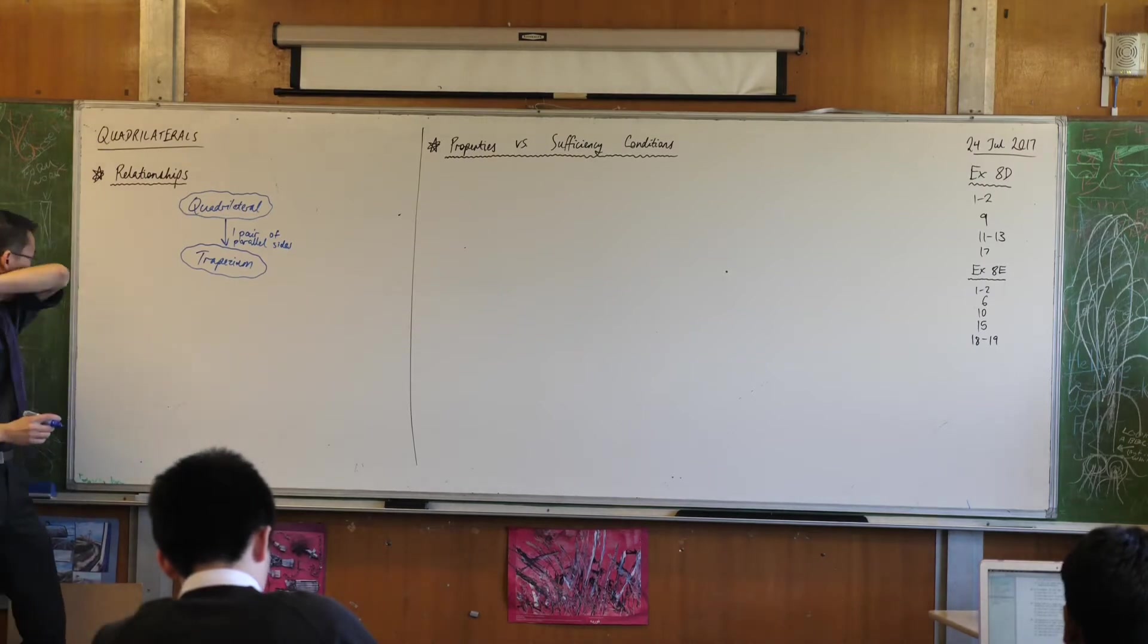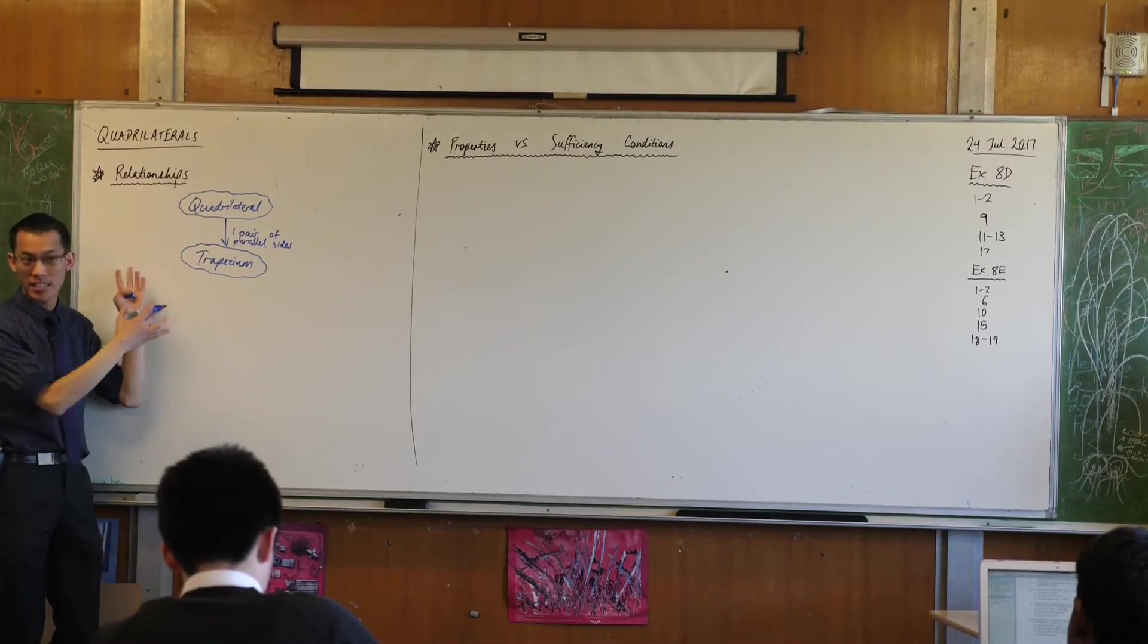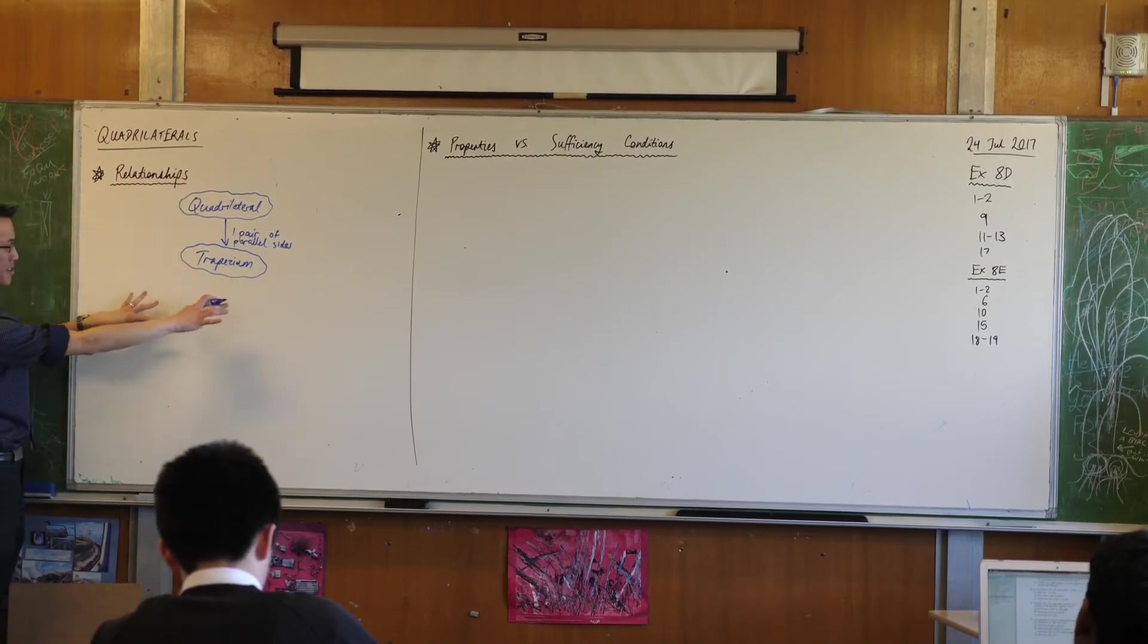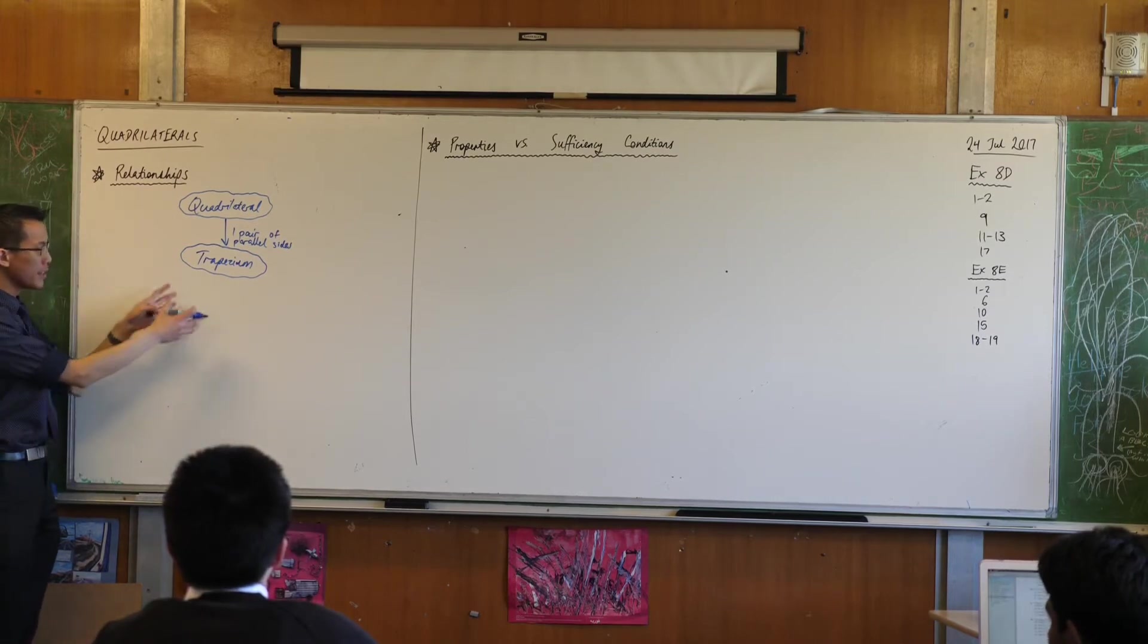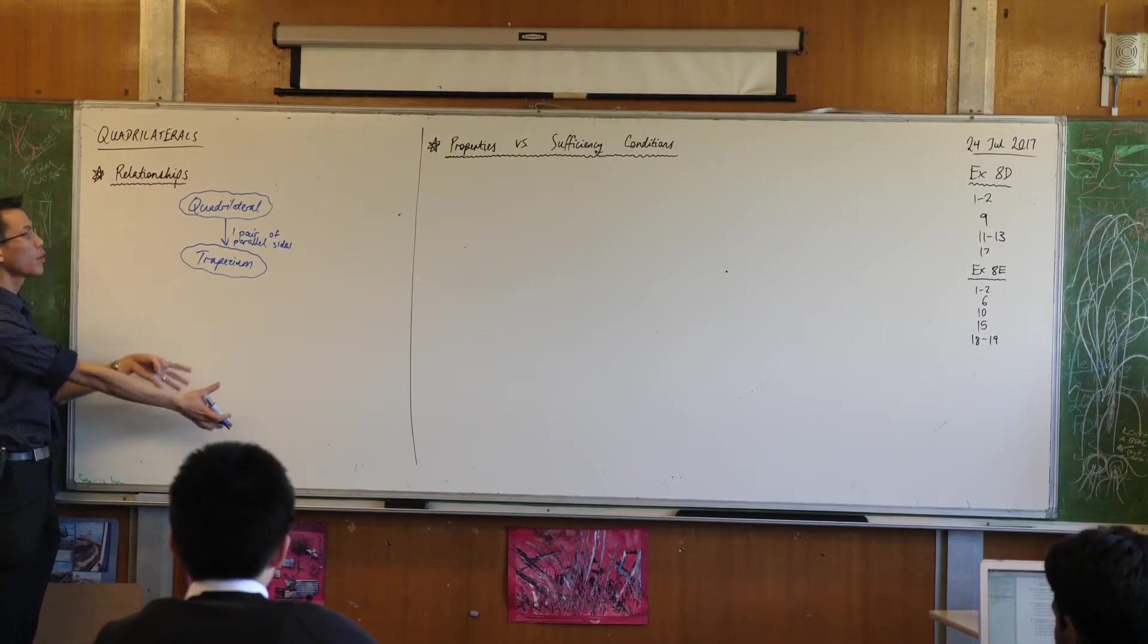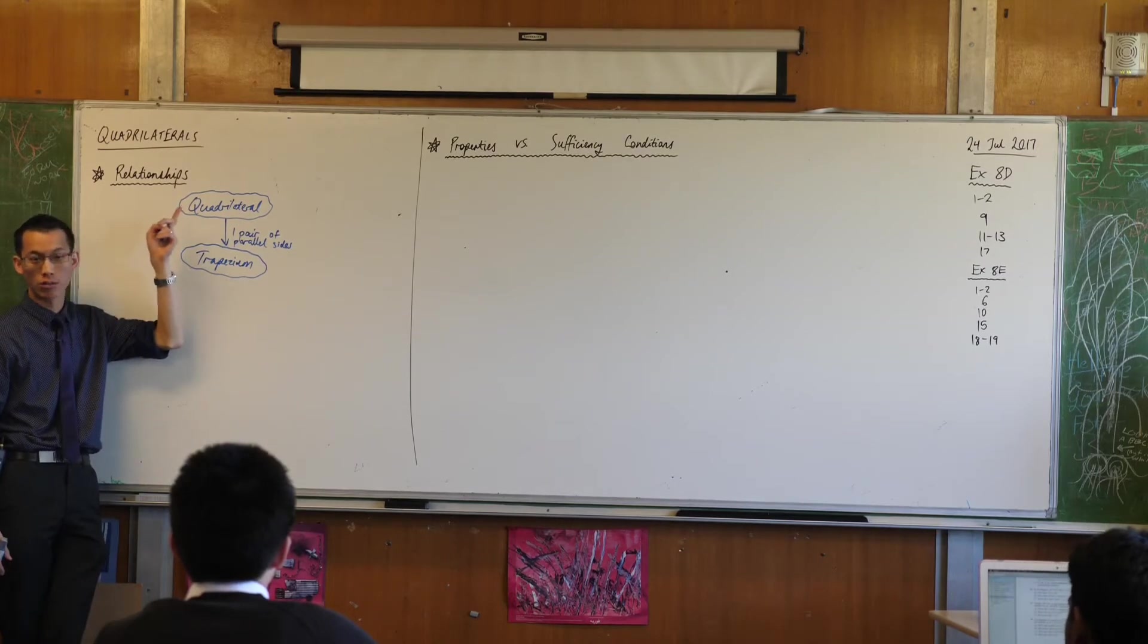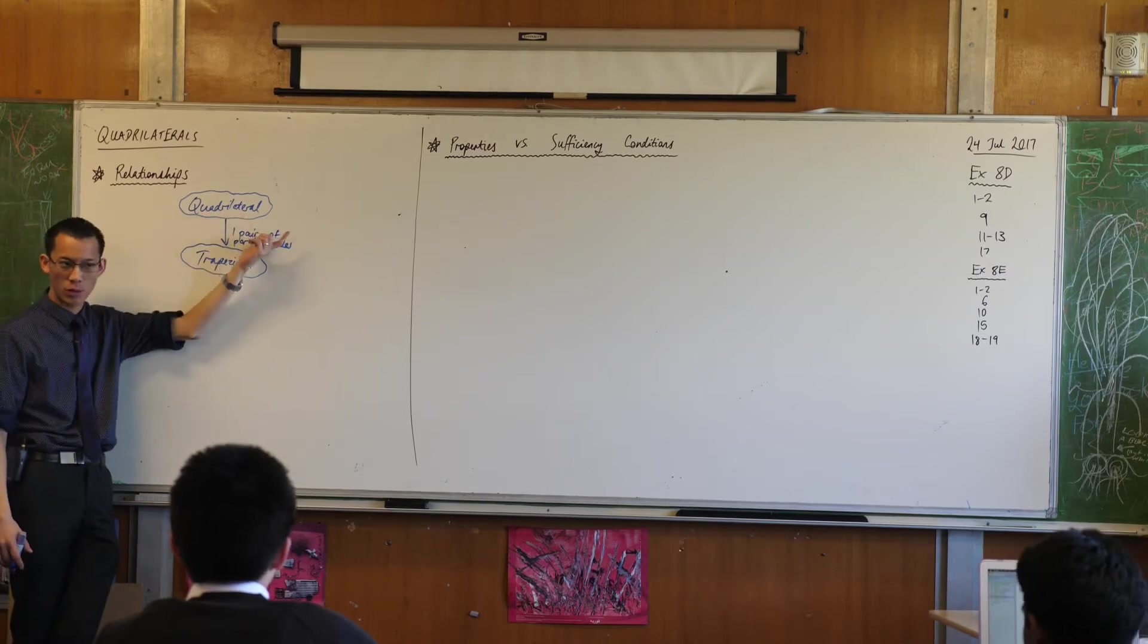I do want to point out that you can add more to this and it's still a trapezium. So as I go down the diagram I'm going to add more properties and everything lower down has all of the properties of the things above it. So for example everything that's true about a quadrilateral is also true about a trapezium because a trapezium is a kind of quadrilateral.